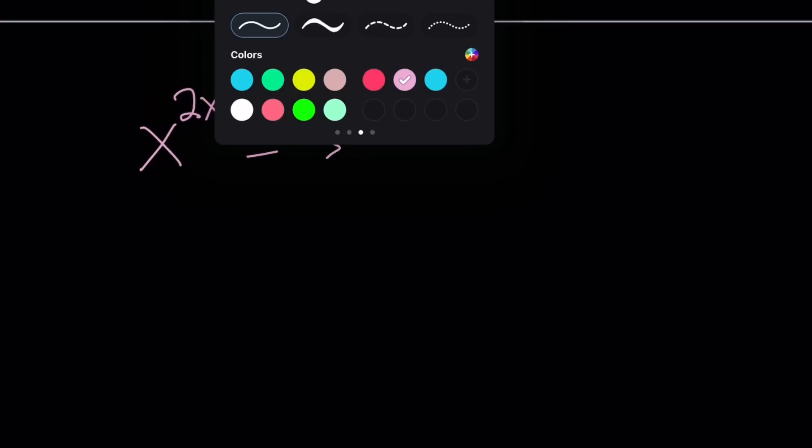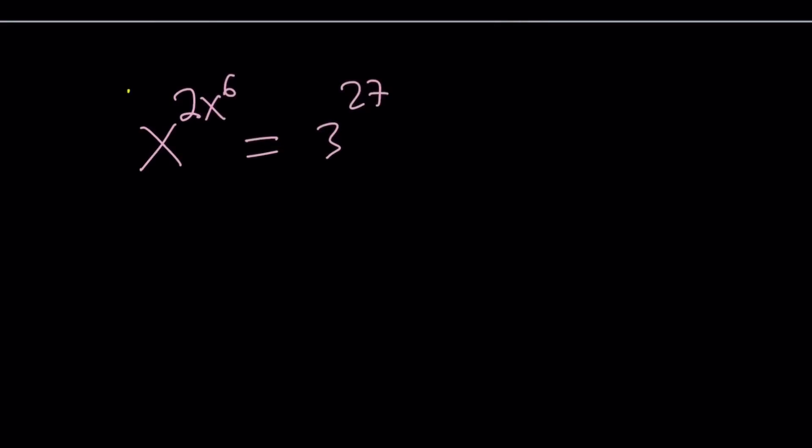So we're supposed to multiply by 3 to get 6 in our exponent. So, we're going to do that first. Let's go ahead and raise both sides to the power of 3.